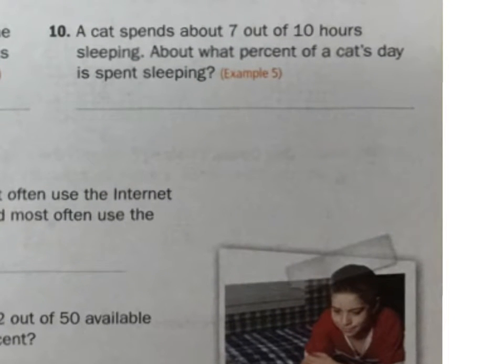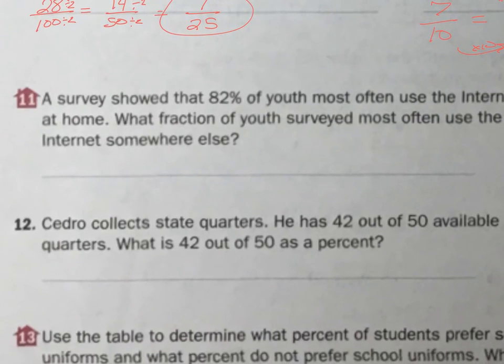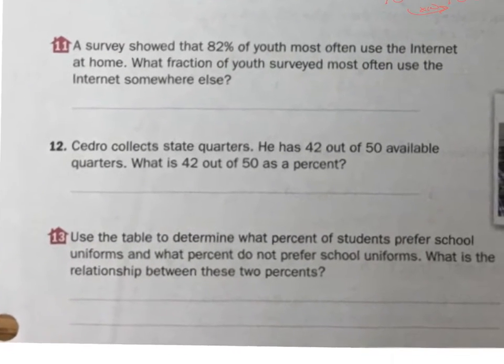A cat spends 7 out of 10 hours sleeping. About what percentage of a cat's day is spent sleeping? 7 out of 10. I want to get that to a percent. I'm going to get it out of 100. Times 10, times 10, 70. 70%. A cat sleeps for about 70% of the day. Quite a little life those kitty cats have.